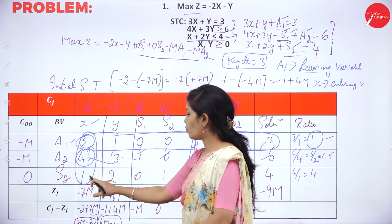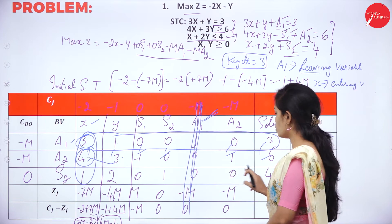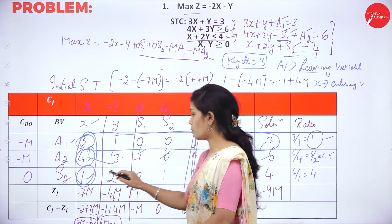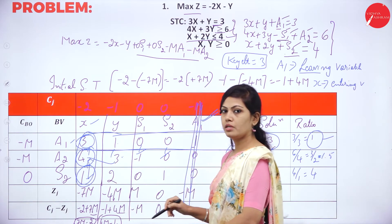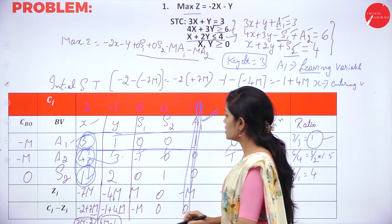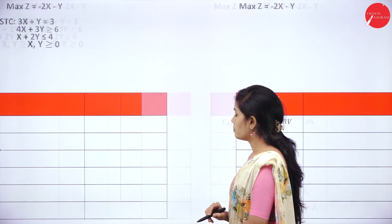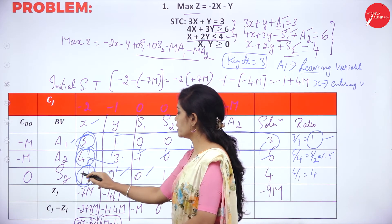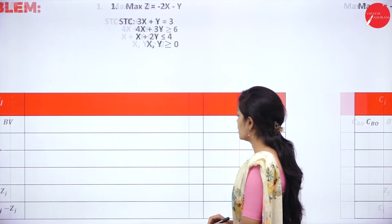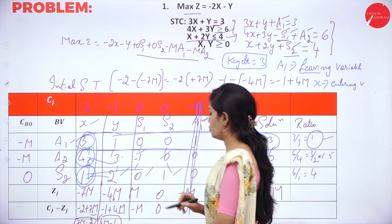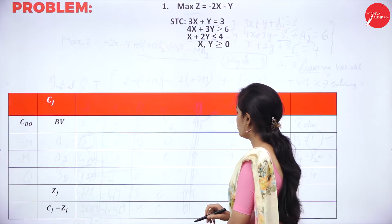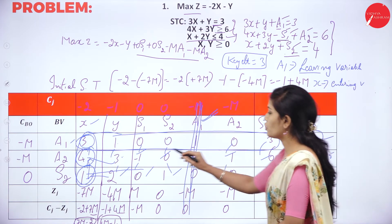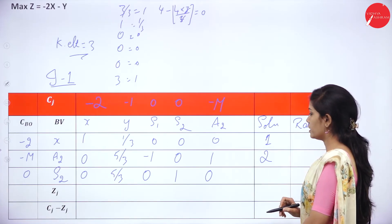For the second non-key row (s2 row), old values: 1, 2, 0, 1, 0, 4. Key column element for s2 row is 1. Calculations: 1 − 1×(3/3) = 0; 2 − 1×(1/3) = 5/3; 0 − 1×(0/3) = 0; (wait: 0 − 1×0/3) = 1 (keeping s2 coefficient); 0 − 1×(1/3) = 0; 4 − 1×(3/3) = 3. New s2 row: 0, 5/3, 0, 1, 0, 3.